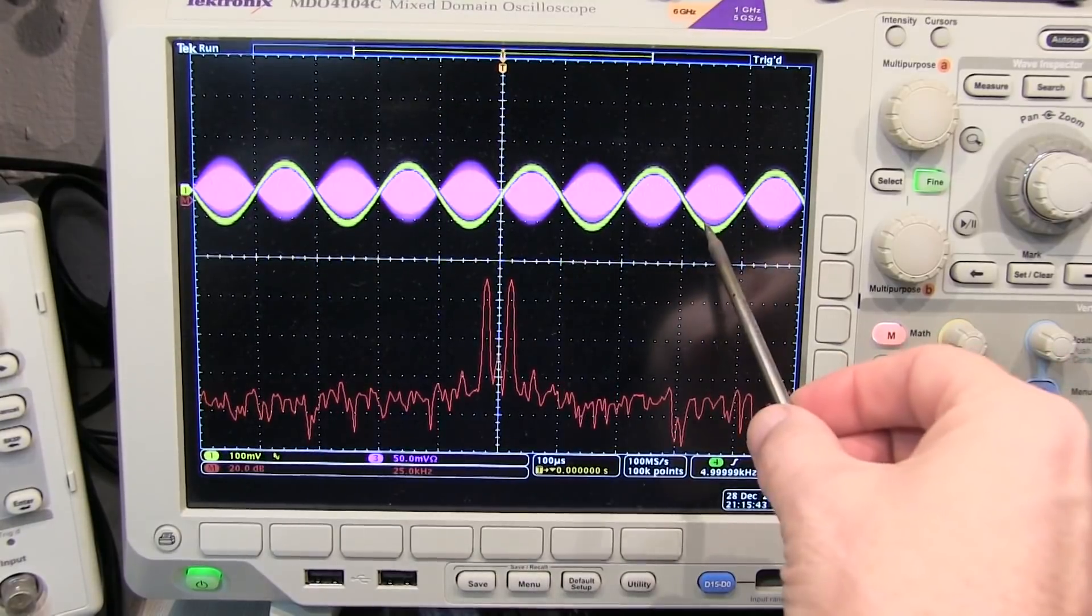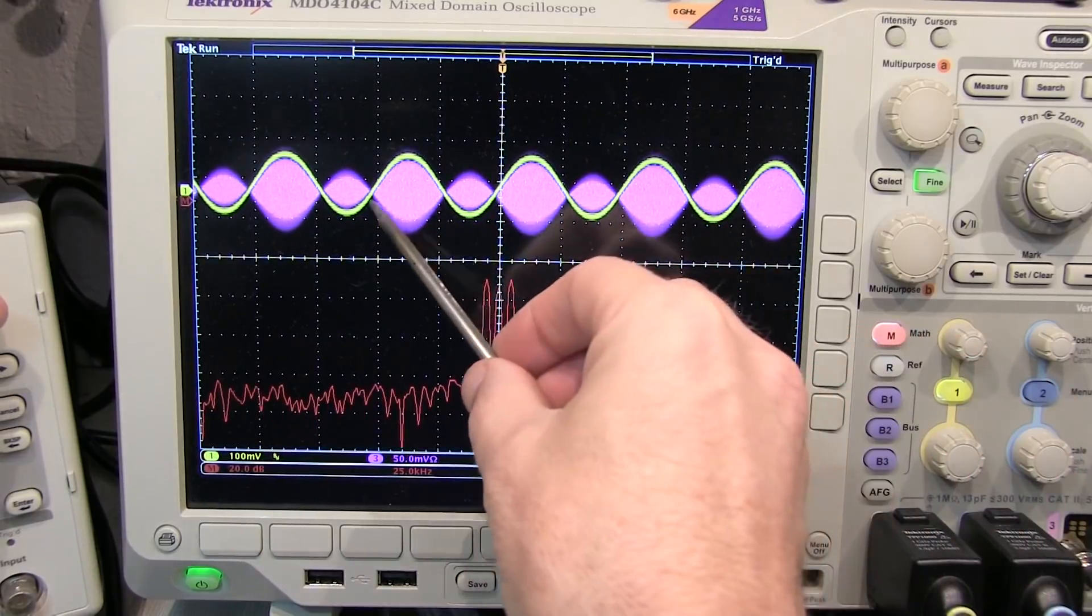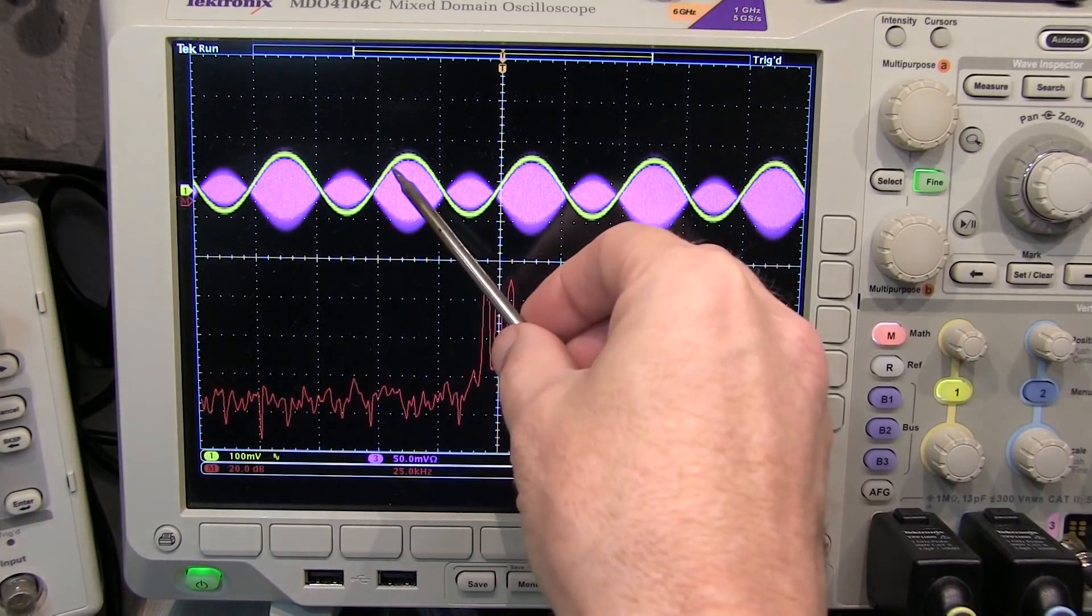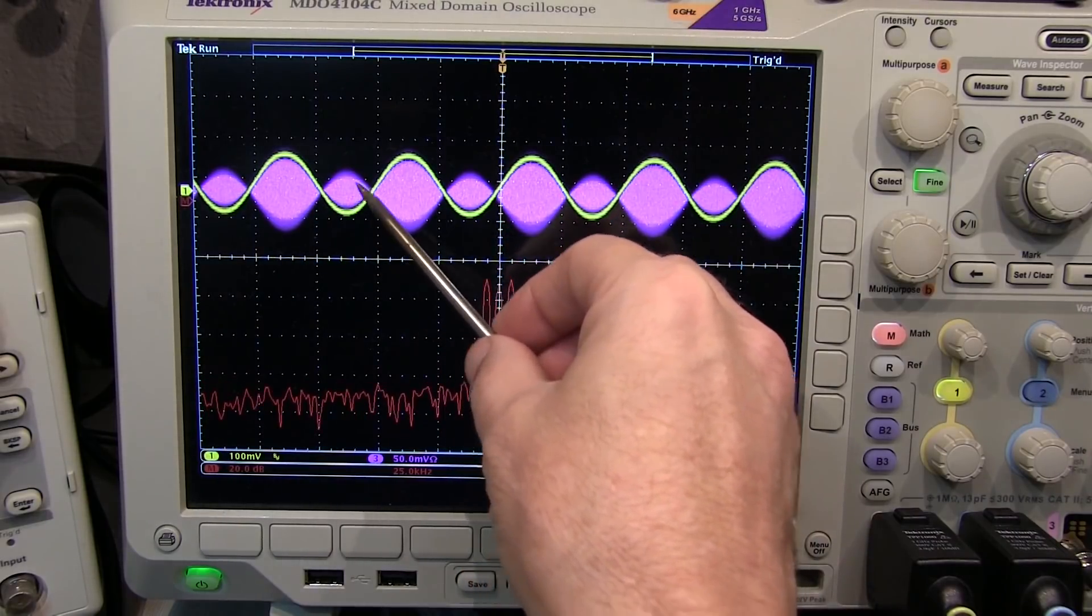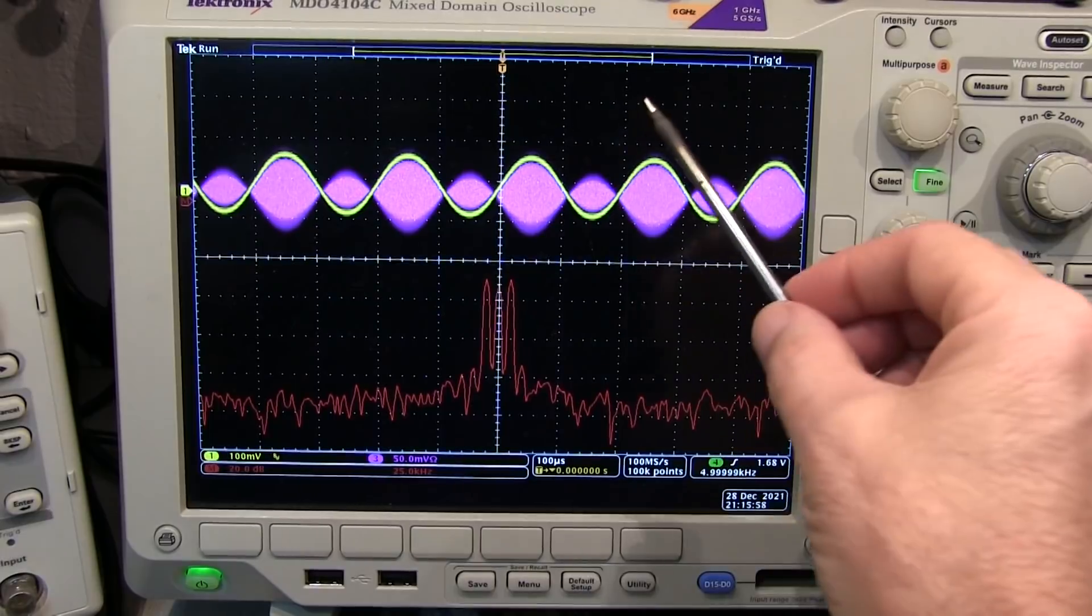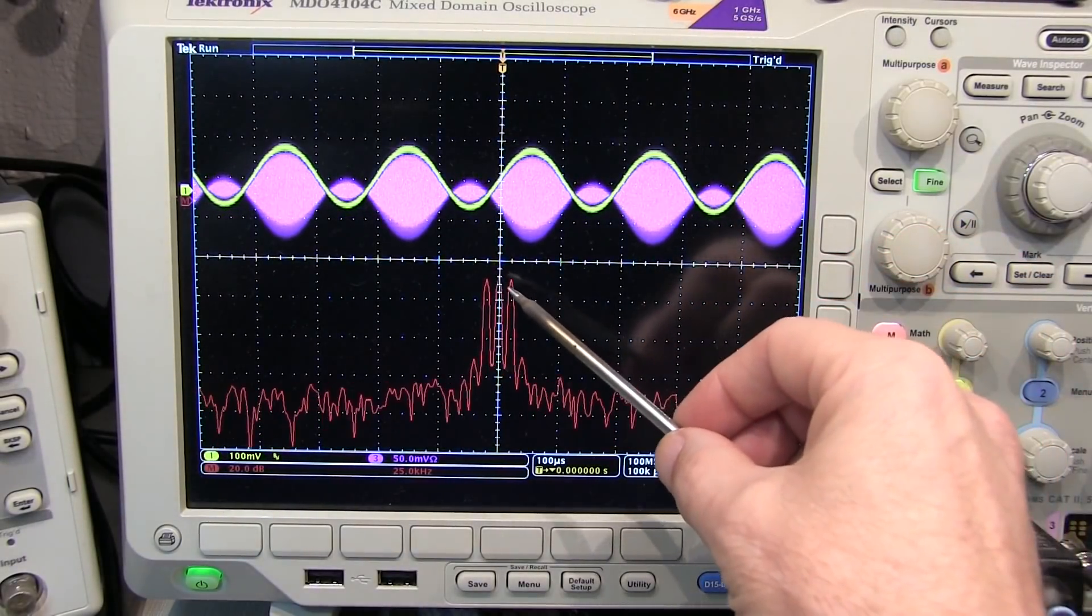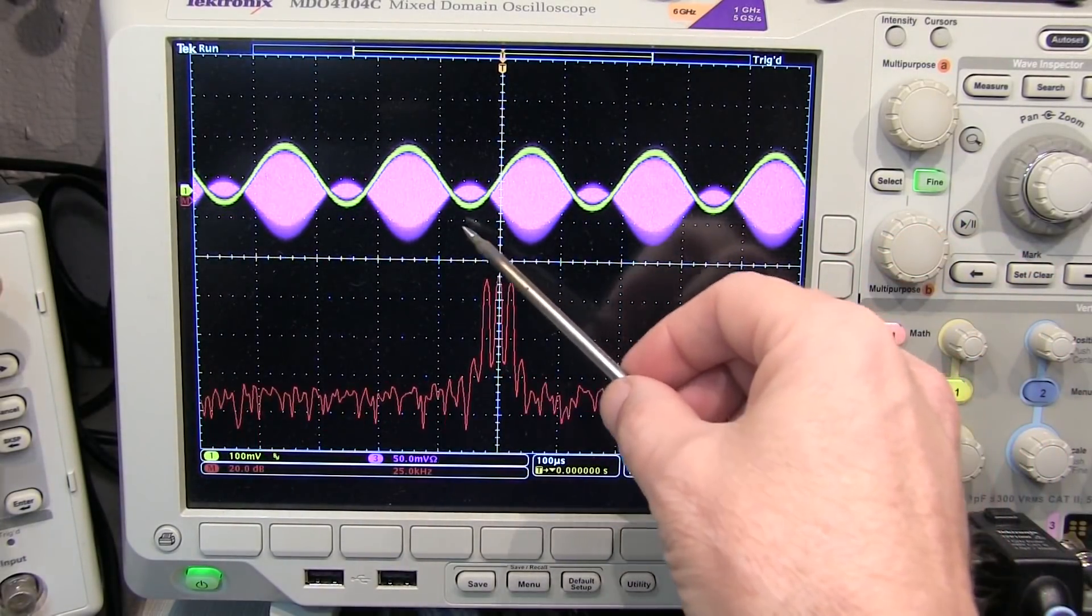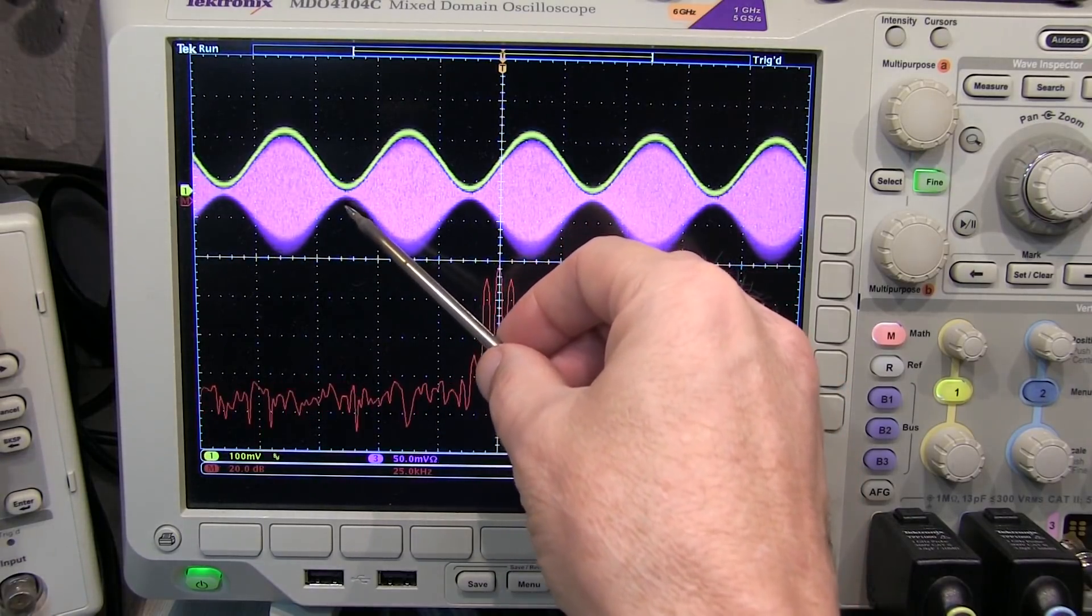So as I add some DC offset to the baseband signal, notice that the RF envelope is kind of following that positive peak and the negative peak here. So the magnitude of the inverted portion of the carrier is getting smaller. Or the magnitude of the non-inverted portion of the carrier is getting larger. As I keep adding that DC offset, you can see the carrier is now coming up. And we get to the point where we get no inversion anymore. In fact, if we bring this up, now I have something less than 100% modulation.